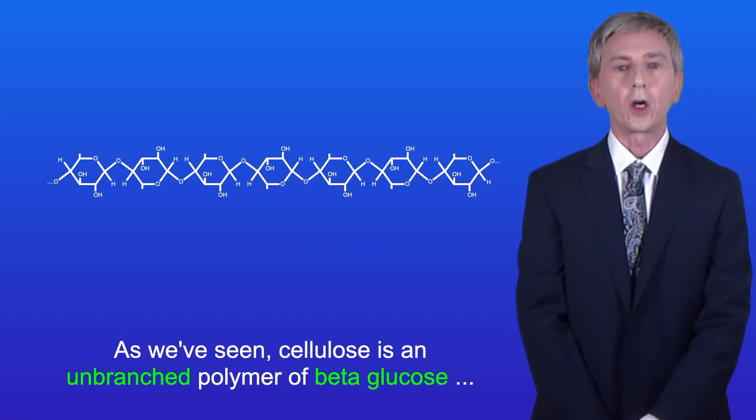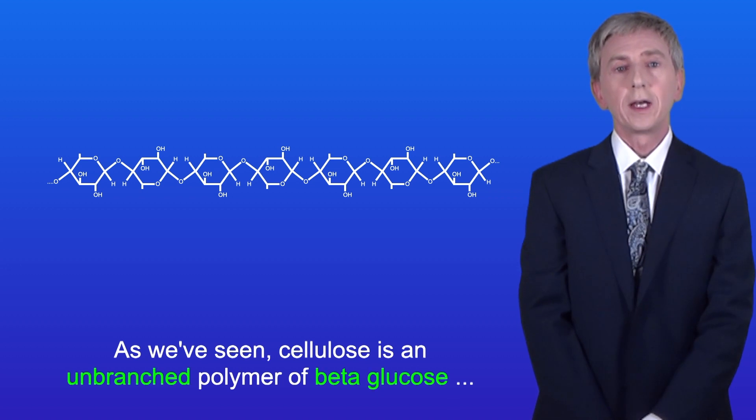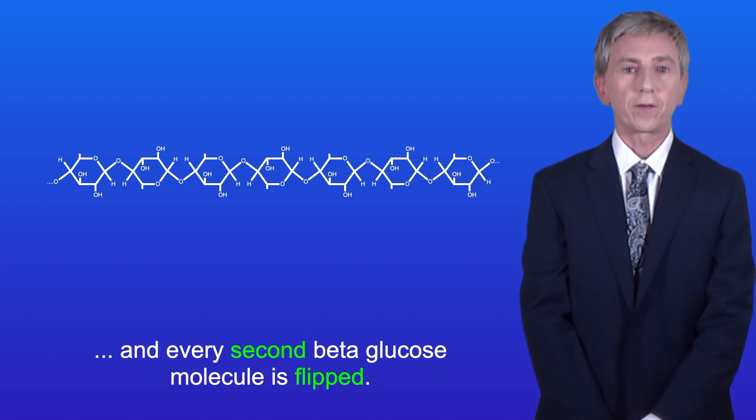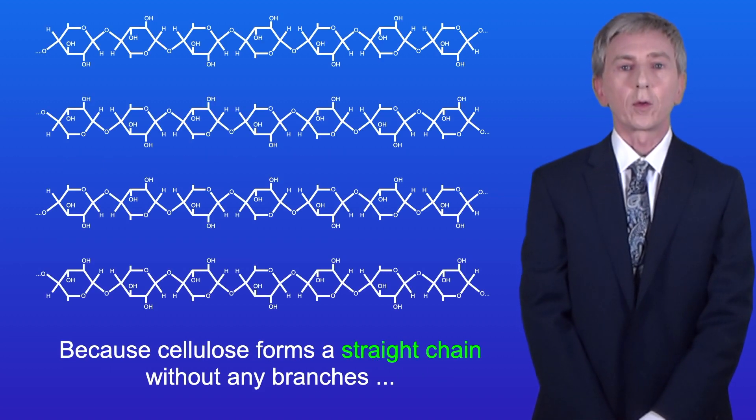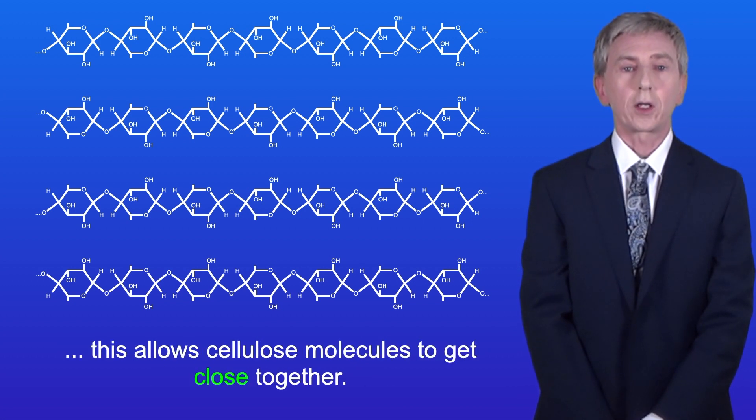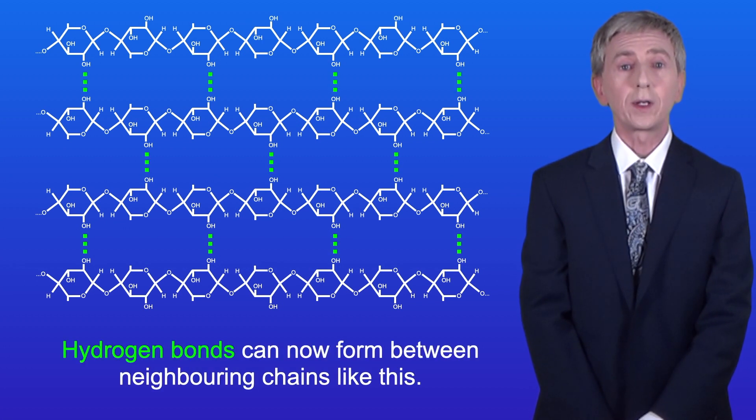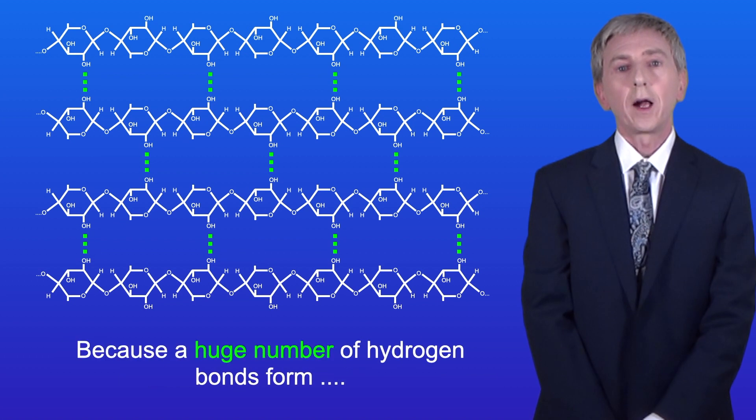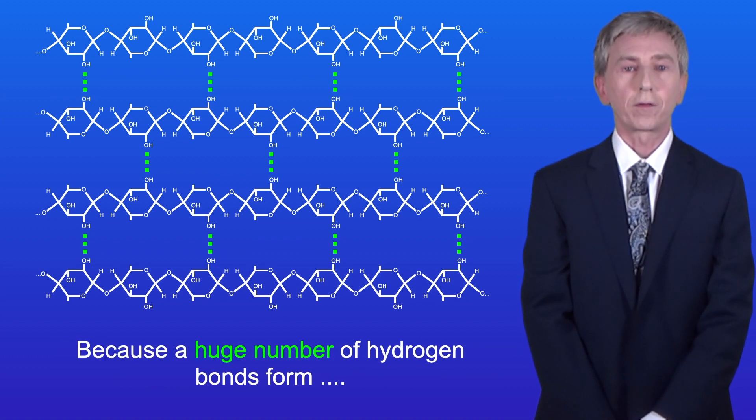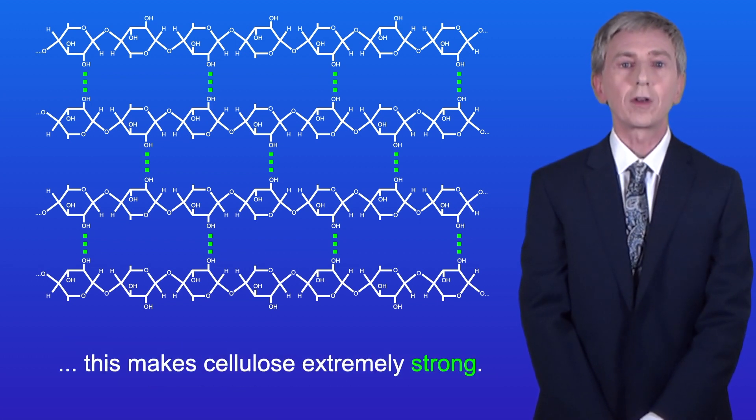So as we've seen cellulose is an unbranched polymer of beta glucose, and every second beta glucose molecule is flipped. Now because cellulose forms a straight chain without any branches, this allows cellulose molecules to get close together, and I'm showing you that here. Hydrogen bonds can now form between neighbouring chains like this, and because a huge number of hydrogen bonds form, this makes cellulose extremely strong.